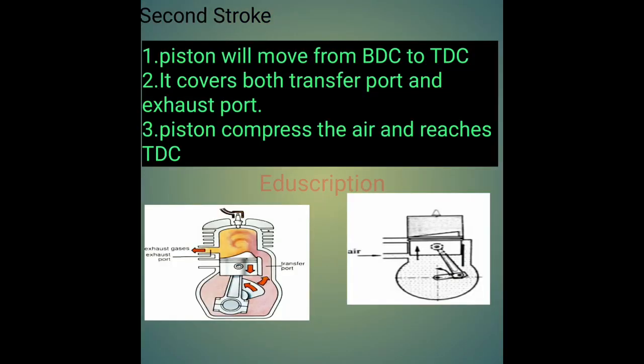In the second stroke, the piston is at bottom dead center and moves from BDC to TDC. As the piston moves upward, it closes the transfer port as well as the exhaust port, thus compressing the air in the cylinder. Once the piston reaches top dead center, the stroke completes. So the suction and compression processes are completed in this one stroke. Thank you.